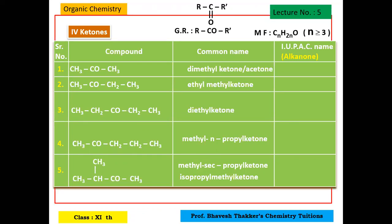Now I will teach IUPAC nomenclature for ketones. In IUPAC, ketones are called alkanones — you remove the final E from the alkane name and add O-N-E. With 3 carbons it becomes propanone; with 4 carbons, butanone. For isopropyl, since iso is one word, alphabetically I comes before M, so isopropyl comes before methyl. For sec-propyl, sec is not considered, so methyl comes first.